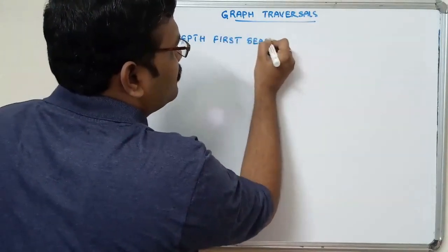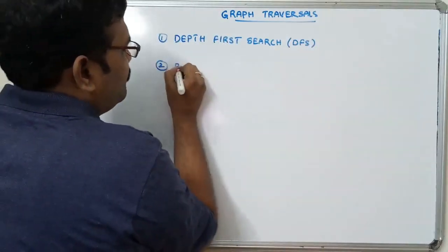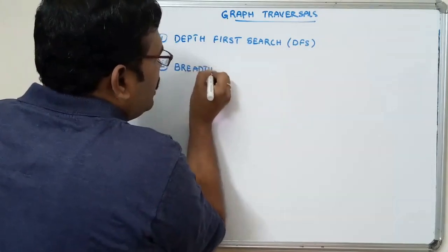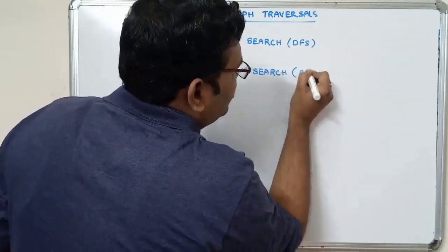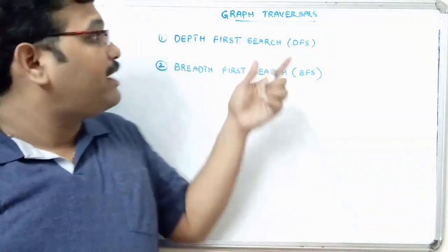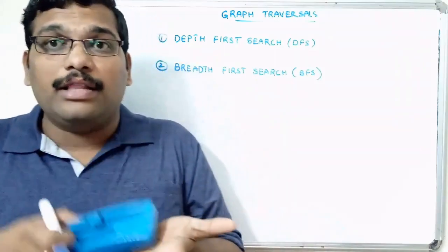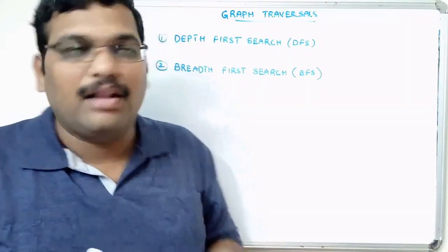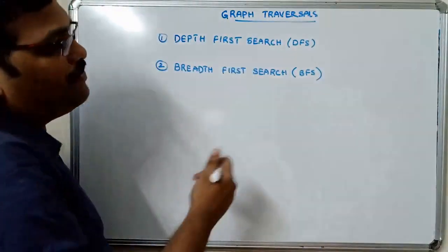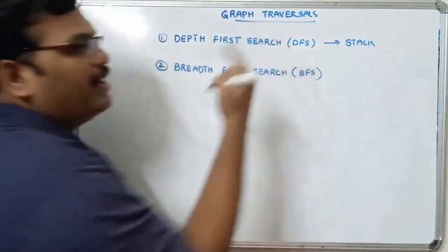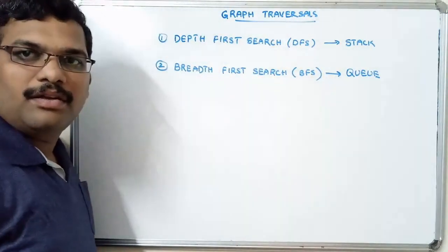The first one is Depth First Search traversal, called DFS, and the second one is Breadth First Search, called BFS. Based upon the depth we travel all the nodes - that is DFS. Based upon the breadth, that means level, we visit all the nodes of the same level first, then shift to the next level - that is BFS. To implement DFS we use a stack data structure, and to implement BFS we use a queue data structure.